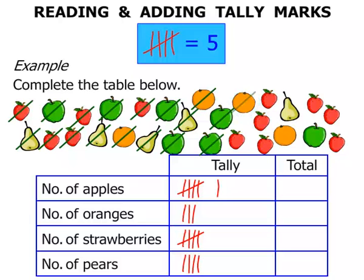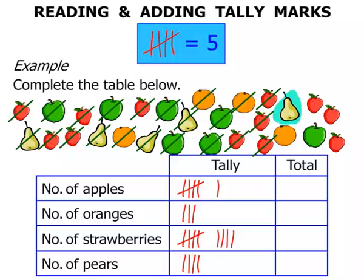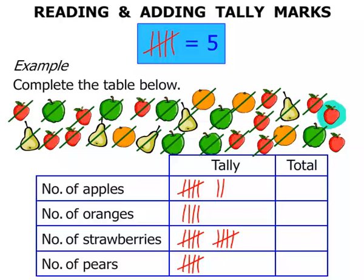I think we've got a few strawberries coming — there's one, there's another one, and another one, and another one. A pear, and that's our fifth pear, so the line goes across. Another orange — we're up to four oranges now. Another strawberry. Another line across, so we've got two groups of five in the strawberries so far. Another apple. Another strawberry, and then the final strawberry we've got.